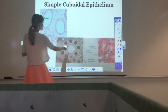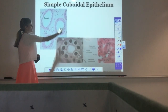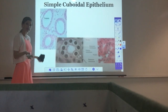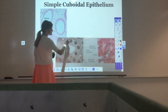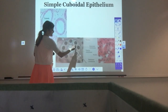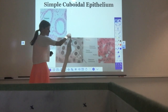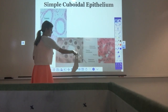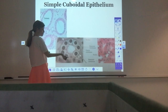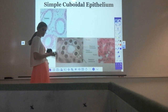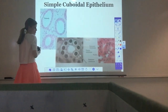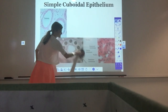Looking at the real pictures of simple cuboidal tissue: this is the lumen — the open space. The layer of tissue lining the open space is the epithelial tissue. It's one layer of cells — not several stacked on top — and they're cube-shaped, squares with a nice nucleus in the center. That's simple cuboidal epithelial tissue. We find them in the kidney tubules and in some glands.